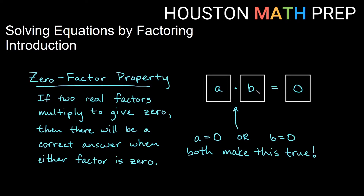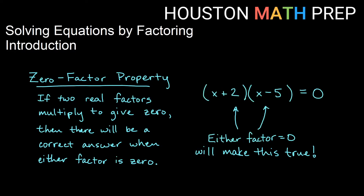The idea is if I have two things that multiply to give me zero and there's some sort of real number or real factor, at least one of those things has to be zero — either the first thing, the second thing, or both being zero will make that true. So if we have two real factors multiplied to give zero, we'll get a correct answer when either of them is zero. When we look at starting to solve an algebra equation by factoring, we're looking at a situation where I have a factor times another factor equal to zero. If I can get it to that stage and I know how to factor, and I know I have two, three, or four factors all multiplying to give me zero, then setting each one of those factors equal to zero is going to give us a solution.